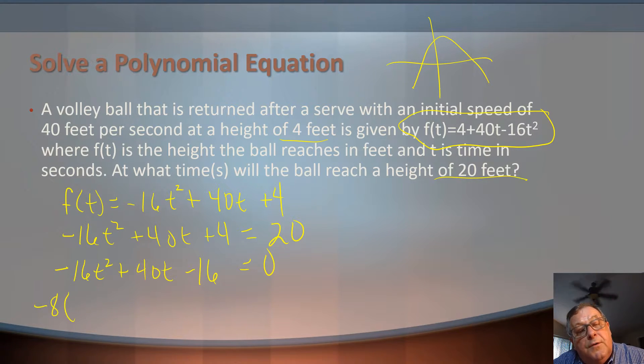And when I do, I'm going to have 2t² minus, let's see, positive 40 divided by negative 8 leaves me with -5t. And negative 8 into negative 16 is plus 2. And that equals 0. Now, we've been talking about the rational zero theorem. So rational zeros,